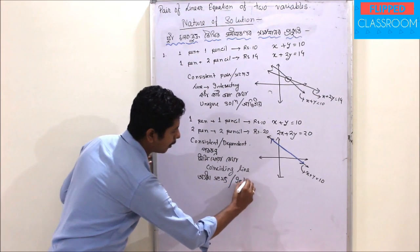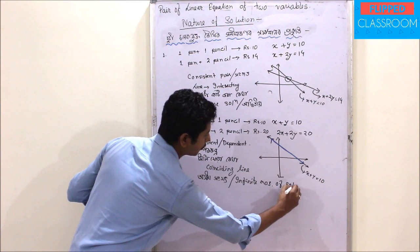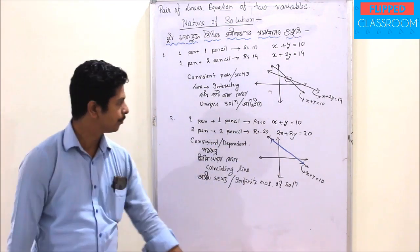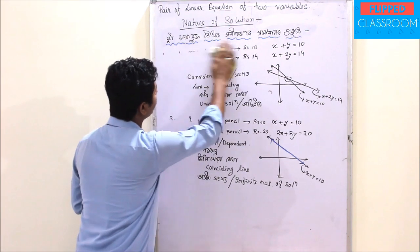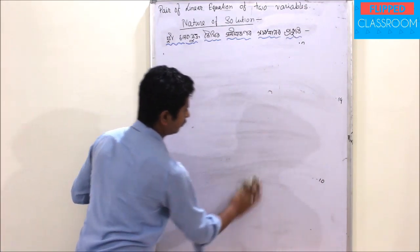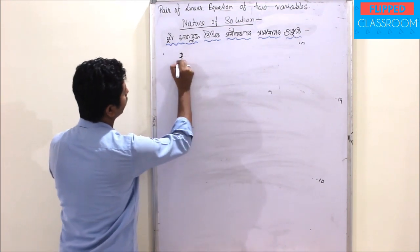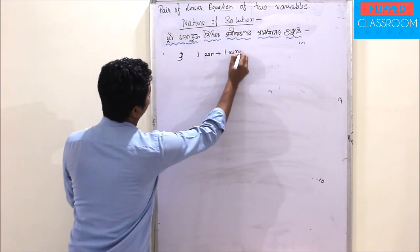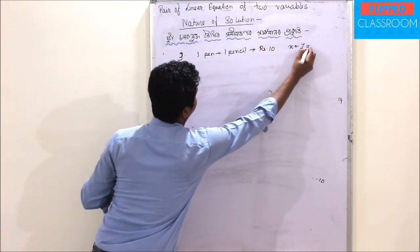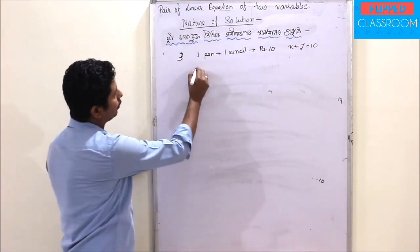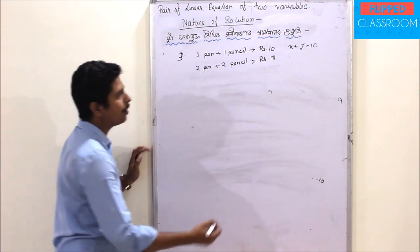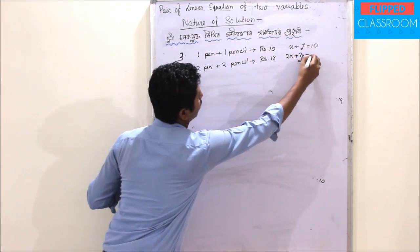We have infinite numbers of solutions. In the second situation, I am able to write the equation. One pen plus one pencil — the price of one pen and one pencil is rupees 10. I can express the equation as x plus y equal to 10.